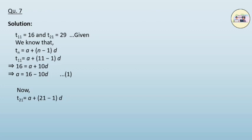we get 29 is equal to 16 minus 10d plus 20d.